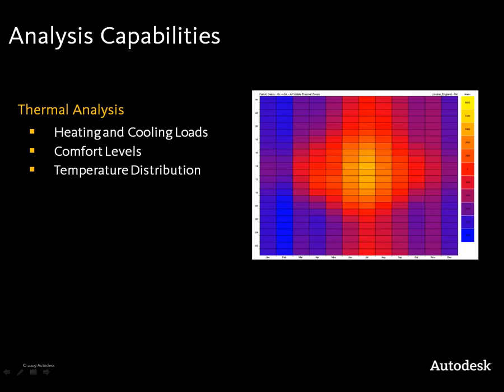With thermal analysis, Ecotect Analysis is very capable of doing very quick iterations. It's very flexible — what are the heating and cooling loads of the building likely to be? You can start to make choices around construction: if I change a roof, is it going to have a significant impact on the heating and cooling loads? By working through many different options very quickly, you can run many more what-if scenarios to get to the best solution.